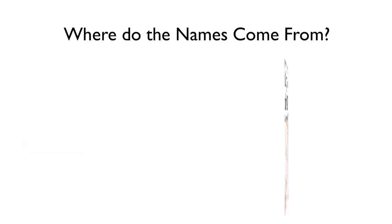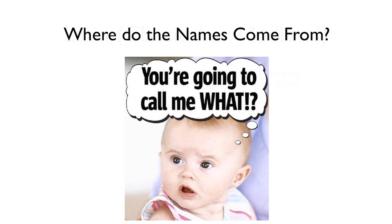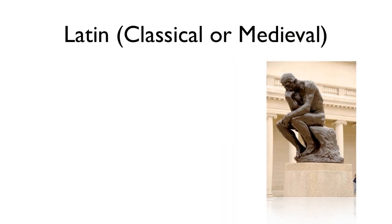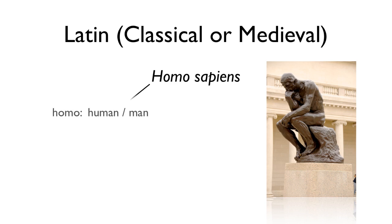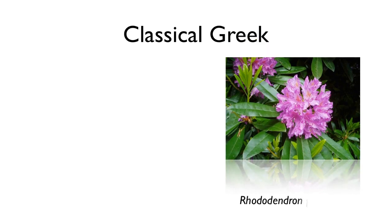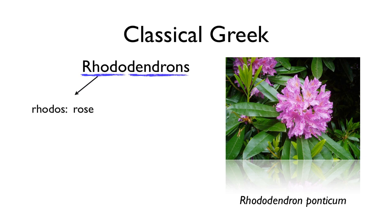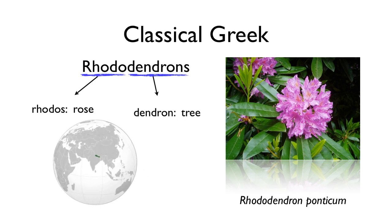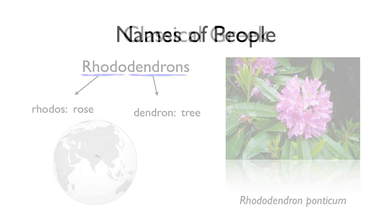You might wonder where these names come from, because some of them are downright strange. Many come from classical or medieval Latin, including the name we gave ourselves: Homo sapiens, which means basically 'wise man.' Many names come from classical Greek. You may know the rhododendrons — in Greek, rhodos means rose and dendron means tree. This is the national flower of Nepal. There are over a thousand species of rhododendrons, and interestingly, most of them are shrubs — very few are actually trees.